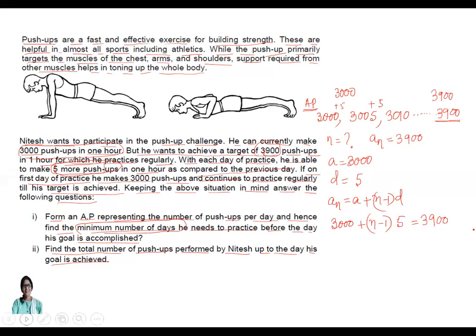You have to find the value of n. So what I'll do, I'll take 3000 to right side. So it will be 5 into (n minus 1) is equal to 3900 minus 3000. That will be 900. Then n minus 1 is equal to, I'll divide 5 there. So 900 divided by 5, that will be 180. So what is the value of n? n is 180 plus 1, that will be 181.